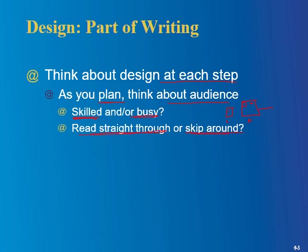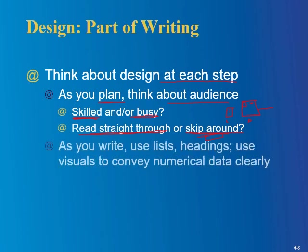Reading straight through versus skipping around — with a menu, people will skip to the main dish; maybe they don't even need appetizers. As you write, use lists and headings, and use visuals to convey numerical data clearly. With a menu, you've got your appetizers — a little list there — sides, another little list. It's very rare to see a menu in paragraph form. Using visuals to convey numerical data: an interesting example on restaurant menus is little pictures — say you're conveying how hot a dish is using Scoville units, but only experts know about that system.